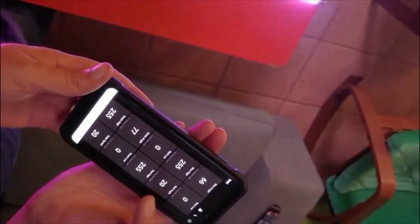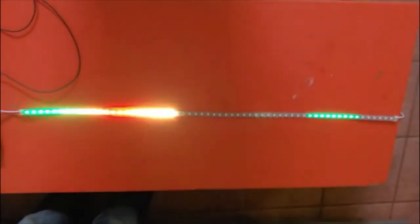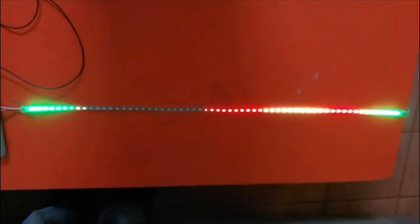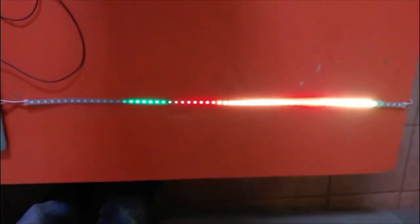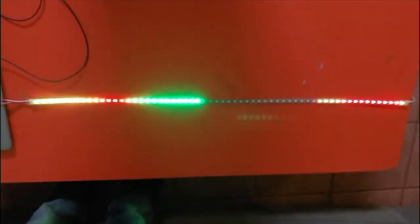So if you take a look at the cell phone here, I can change settings like turning off the blue, and we should see that the strip has now gone to green and red.